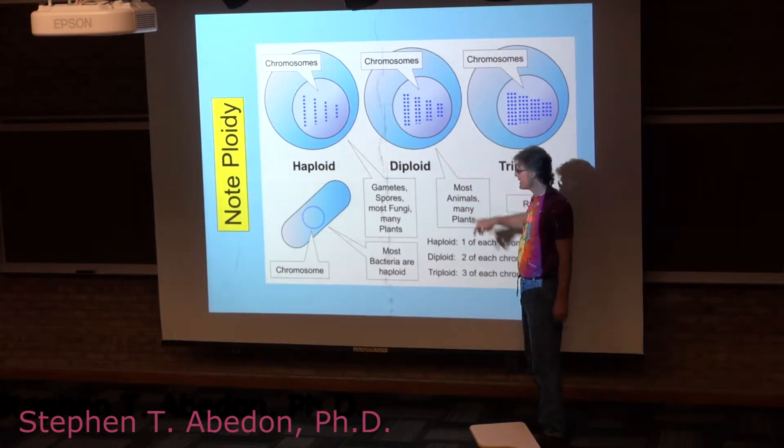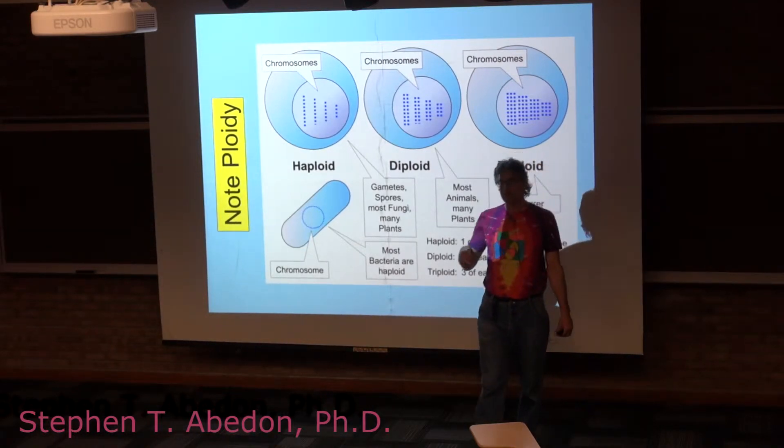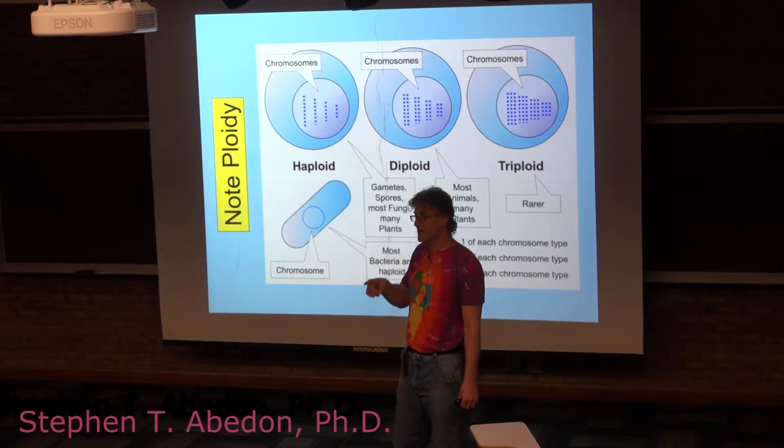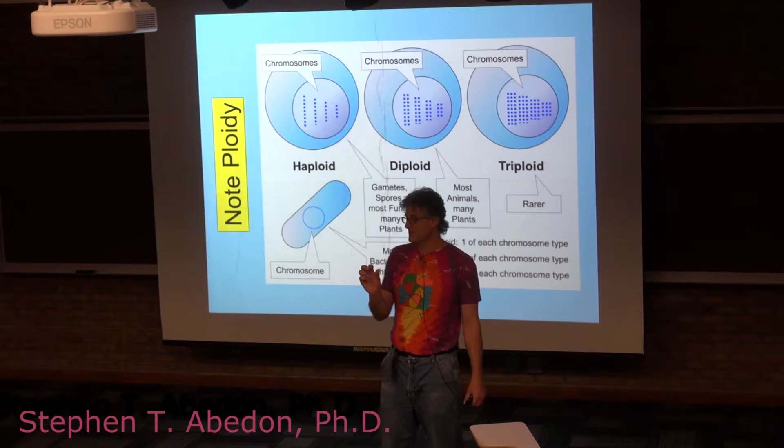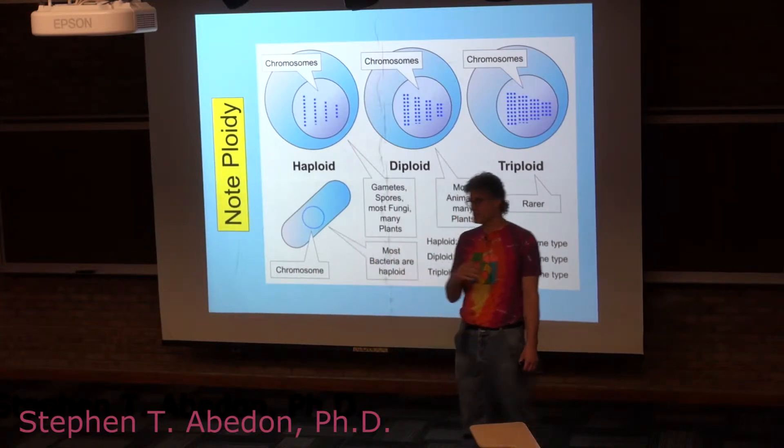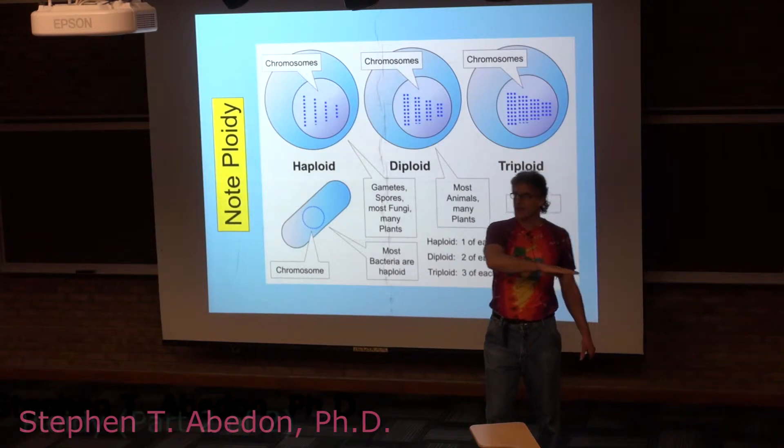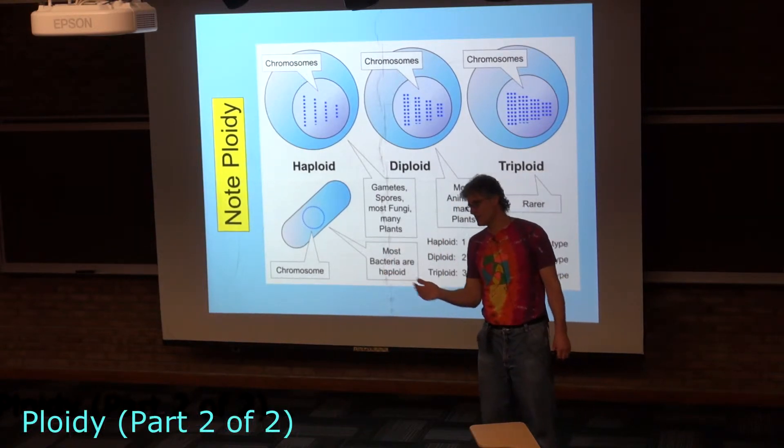The diploid state, most animals are diploid, most plants are diploid, but plants are really complicated because every plant has both a diploid plant and a haploid plant that it goes through from generation to generation. It's called alternation of generations. You go from a haploid plant to a diploid plant to a haploid plant to a diploid plant.